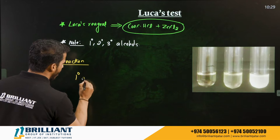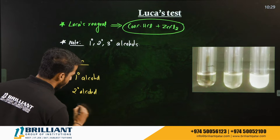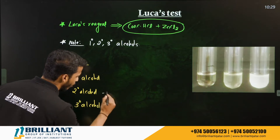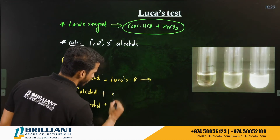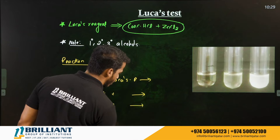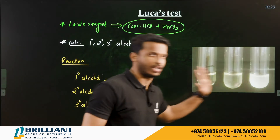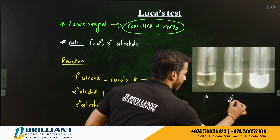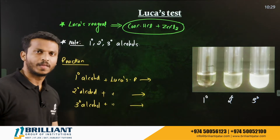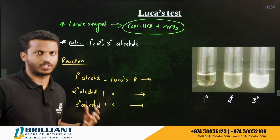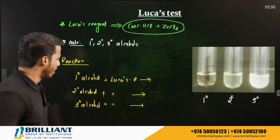When primary, secondary, and tertiary alcohols are each treated with Lucas reagent, the observation you get is turbidity — but the reactivity is different for each type. Tertiary alcohol will give you immediate turbidity.